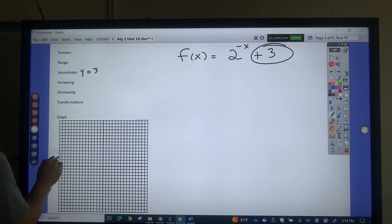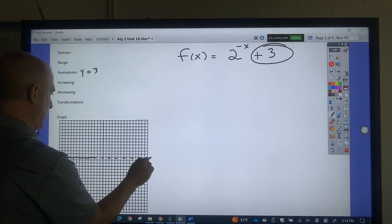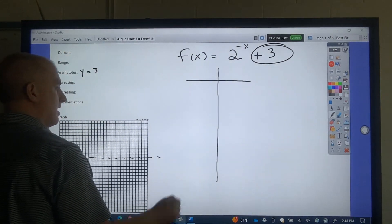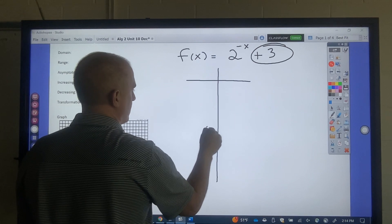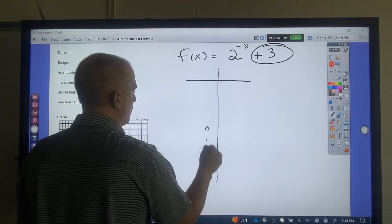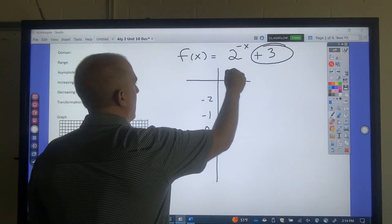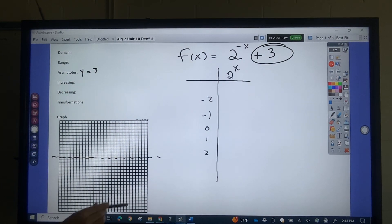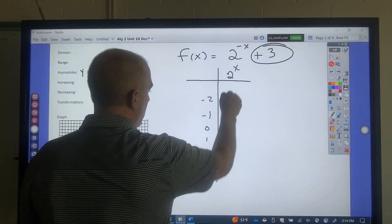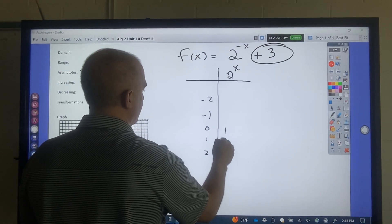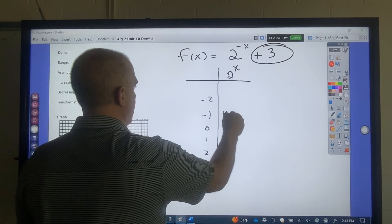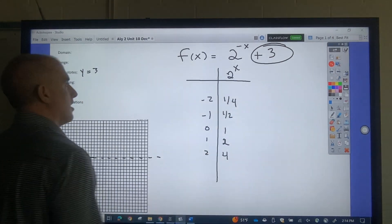So it's 1, 2, 3, straight across here. So what I want to do is I want to make a table. I got 0, 1, 2, negative 1, negative 2. I'm going to do 2 to the x, not 2 to the negative x. 2 to the 0 is 1. 2 to the first is 2. 2 to the second is 4. This would be 1 half. This would be 1 fourth.